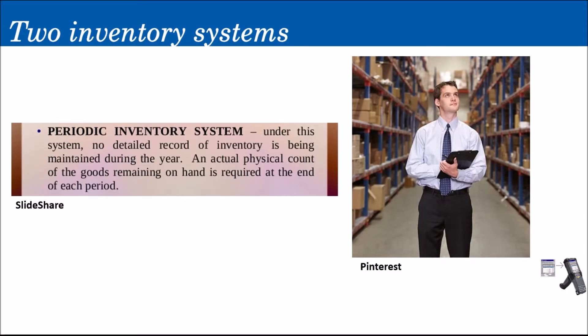In the periodic inventory system, there is no maintenance of detailed inventory records — every time goods leave or enter the warehouse, it is not immediately recorded. The disadvantage is that you don't know the proper level of inventory at any given time. You might be running out of stock without knowing it, because you rely only on the physical count at the end of the accounting period. What if mid-period you already needed to restock?